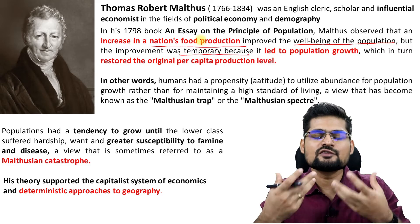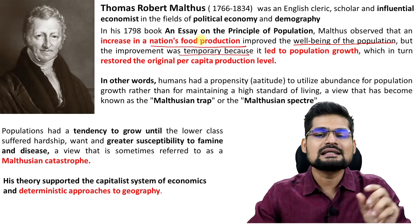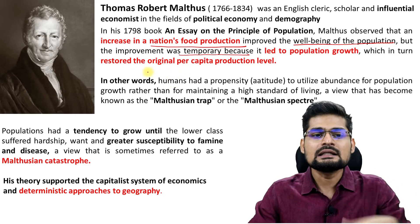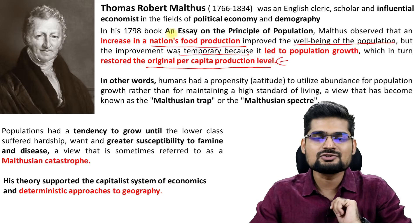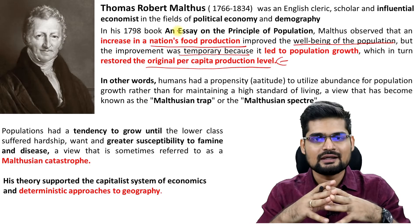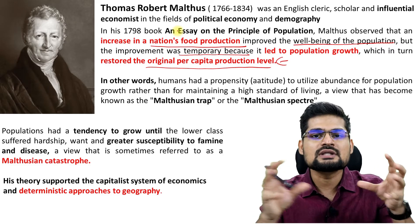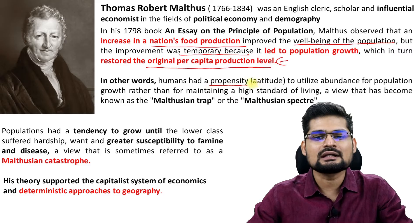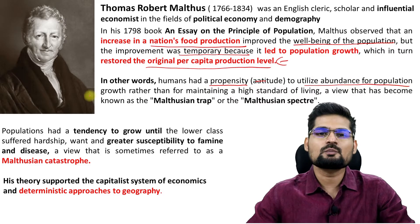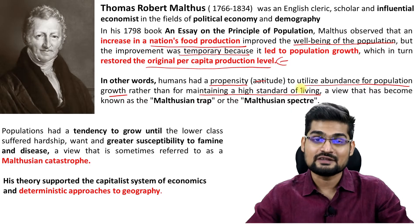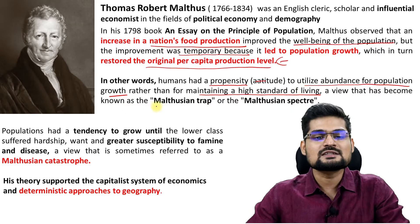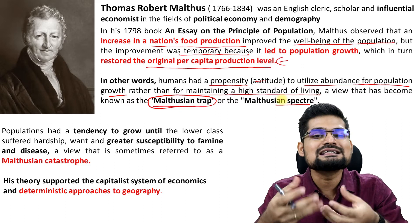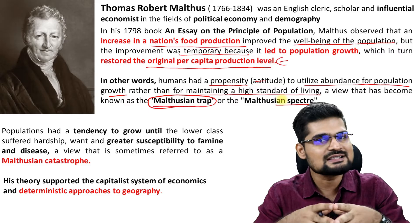Why temporary? Because if you improve resources, improve food production, according to Malthus, it led to fast population growth, and then gradually the per capita production level would be restored to its original level. So ultimately development would stall if you have too much population. In other words, humans had a propensity to utilize abundance for population growth rather than maintaining a high standard of living — a view that became known as the Malthusian trap or Malthusian spectre.